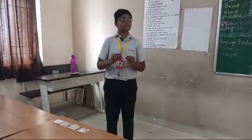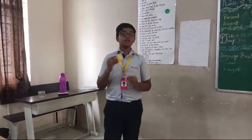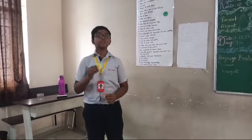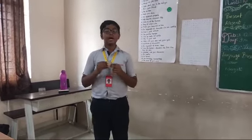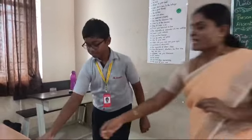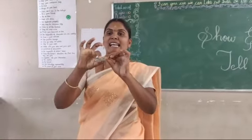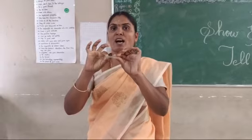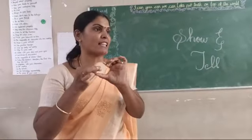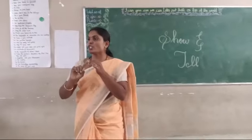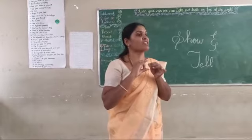This is a convex lens. It is thin at the edges and thick at the center. It is a positive lens, also known as a converging lens. It is used to correct hypermetropia, that is long-sightedness.